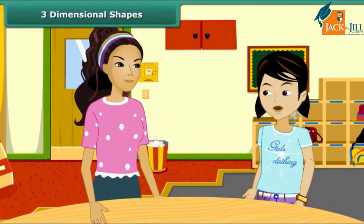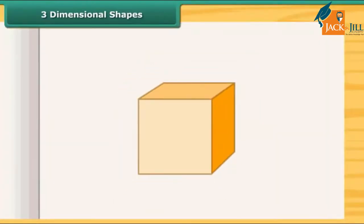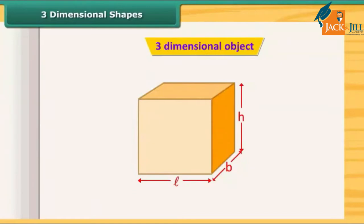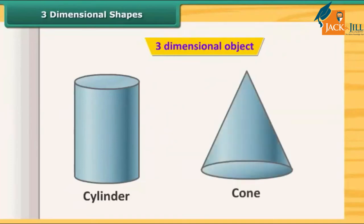What are three-dimensional shapes? A solid object having three measurements like length, breadth, and height are called three-dimensional objects. Look at this cuboid. It has length, breadth and height, so this is a three-dimensional object. The cylinder, cone, etc. are also three-dimensional figures.